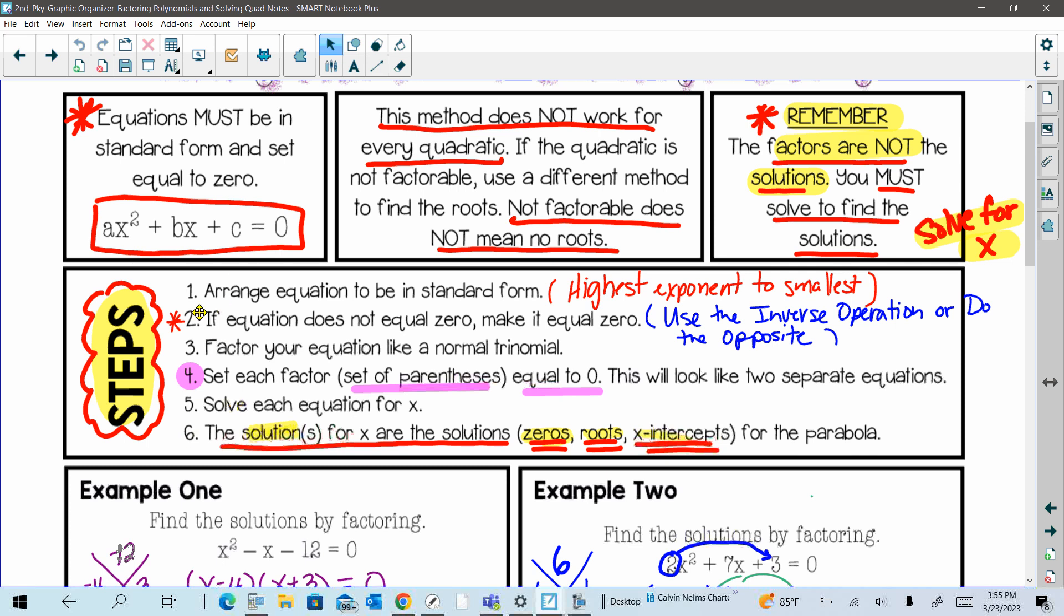So we're first going to rearrange the equation so it's in standard form. Highest exponent comes first to the smallest. Make sure the equation is equal to zero. Factor like normal. Then set each set of parentheses equal to zero and we're going to solve for x.